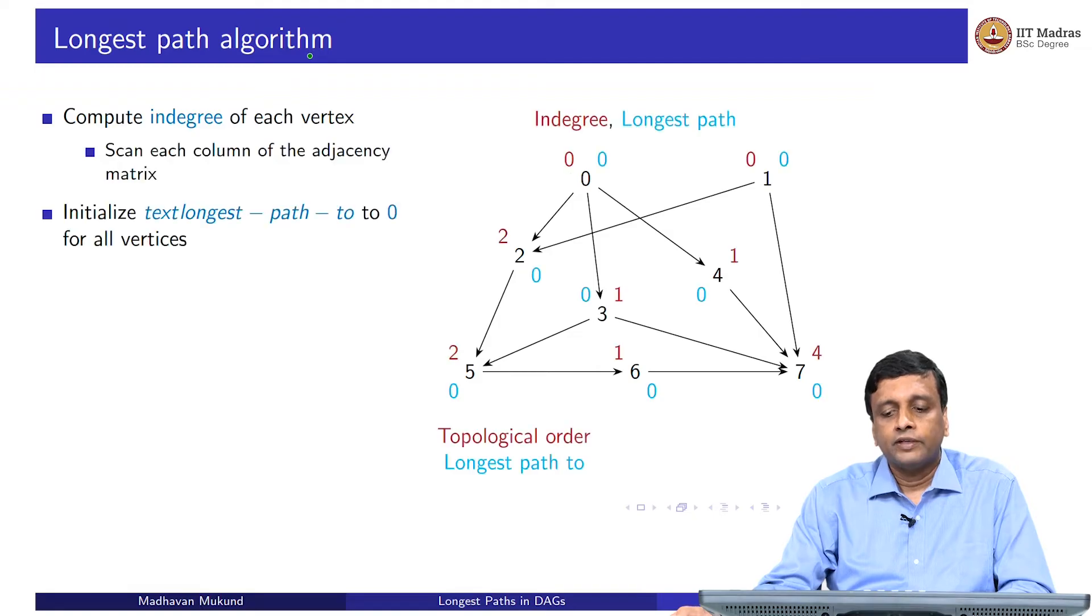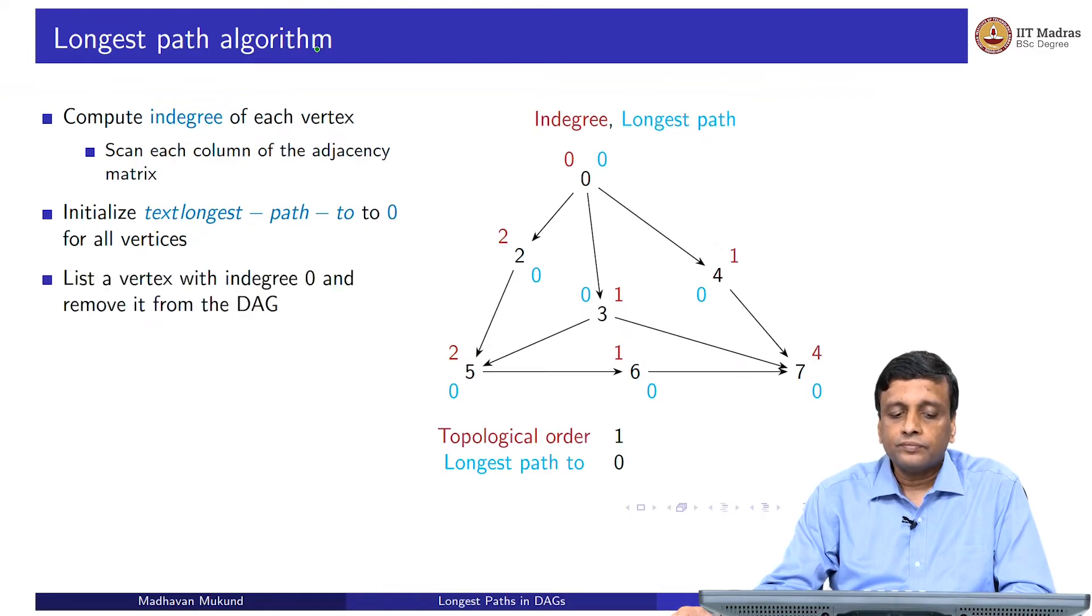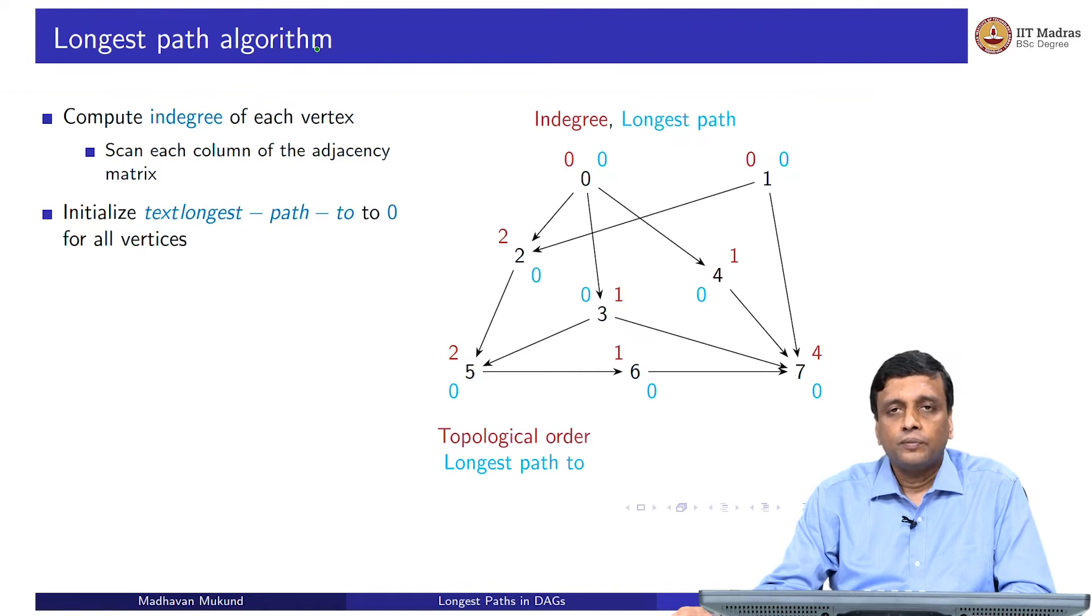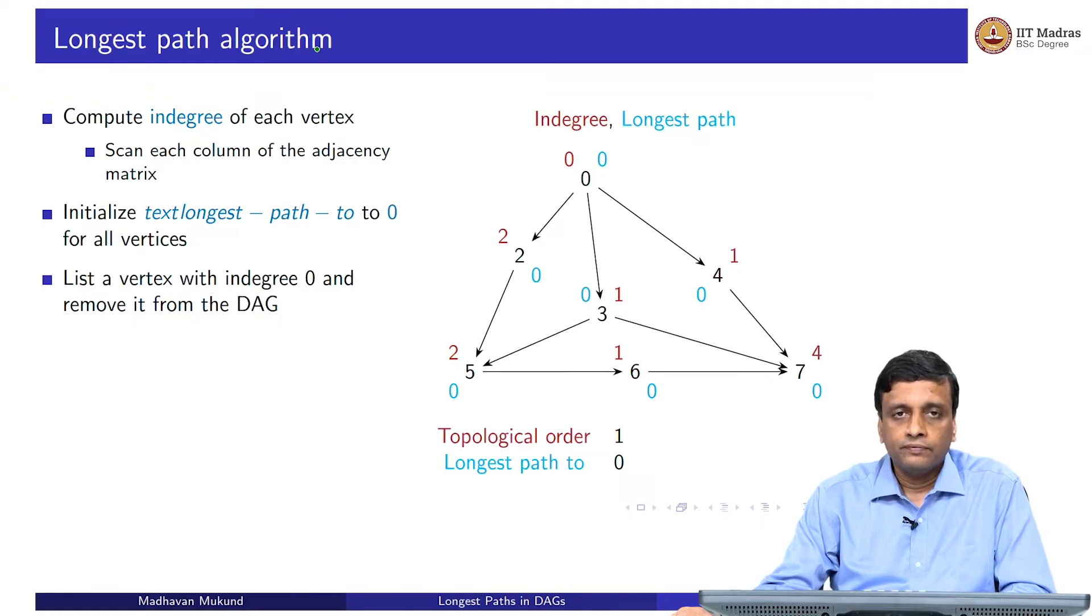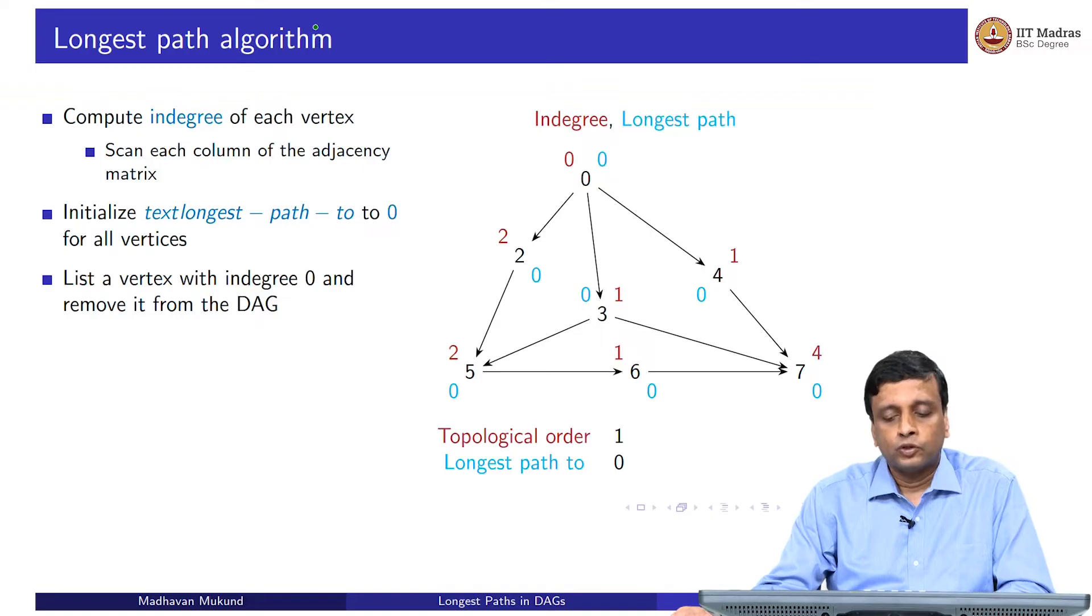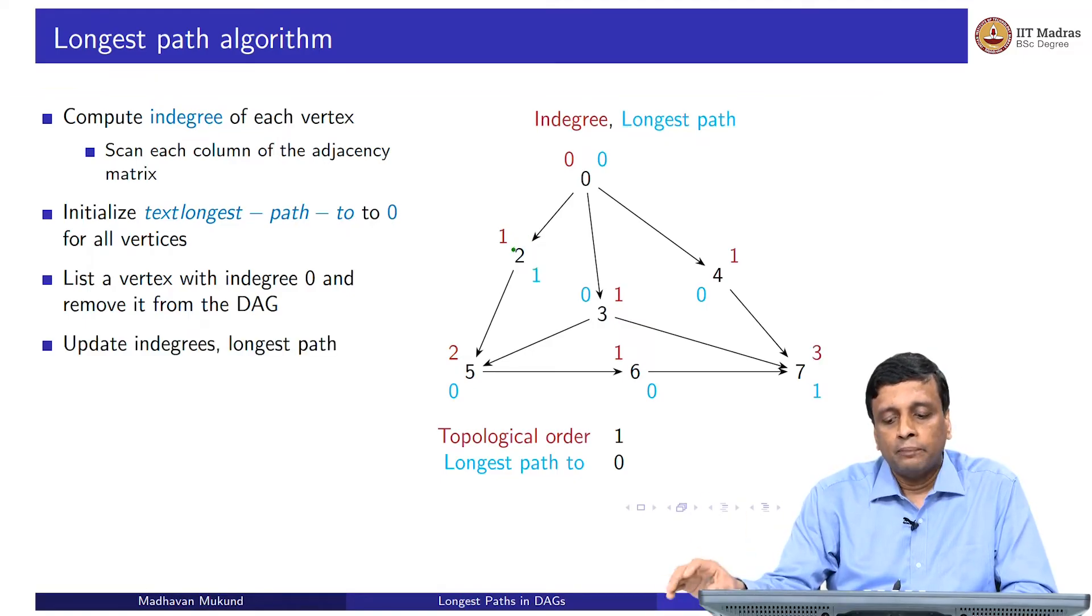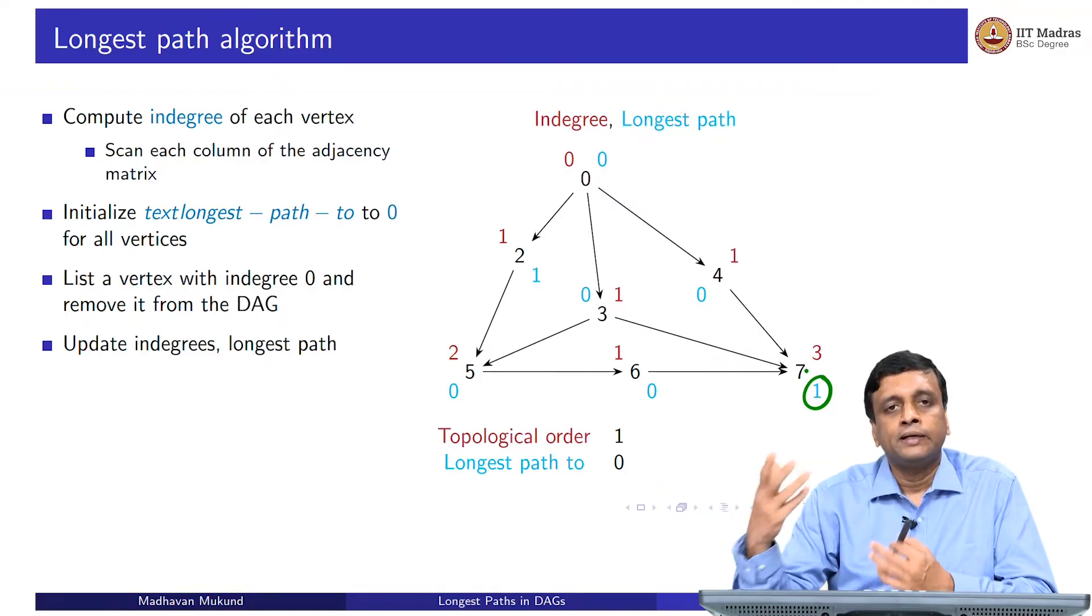As before we start by computing the indegree of every vertex, and now we will also simultaneously compute the longest path of every vertex. We initialize the longest path to be 0 by assumption. Now wherever I have indegree 0, it is 0. When I enumerate something, I eliminate it from the graph, I update the indegrees, but I will also update the longest path. Now I know, for instance, that it takes me at least one step to reach 2 because I have to do something before it. So I will update the longest path to 2 and to 7 as being 1 plus the longest path to the vertex which I just eliminated. I am incrementally updating the longest path.